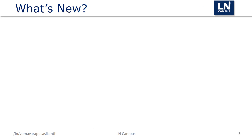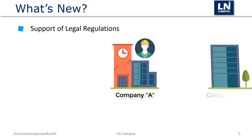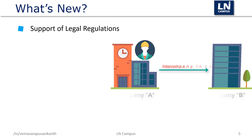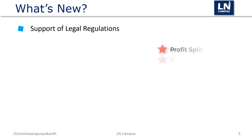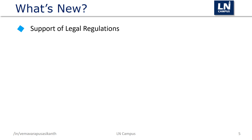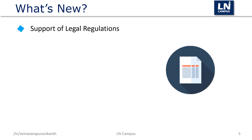There are a number of enhancements done on the intercompany trade solution. The solution now supports legal regulations — for example, when an engineer works on a project of another financial entity, the booking of hours and expenses can result in an intercompany trade order, optionally with an invoice. New pricing options are available in LN 10.5 based on transfer pricing guidelines such as profit split. For intercompany transactions, a dedicated invoice layout can also be used.